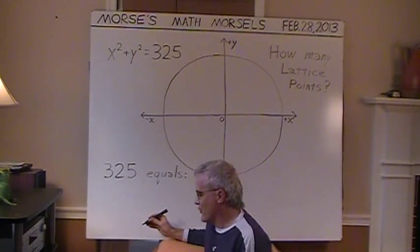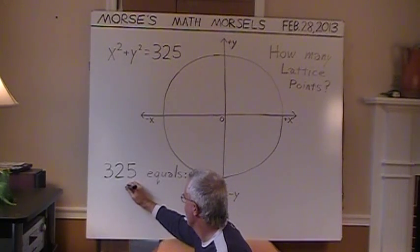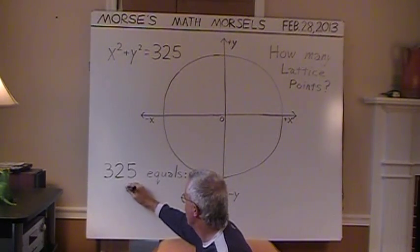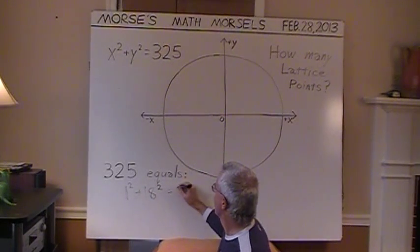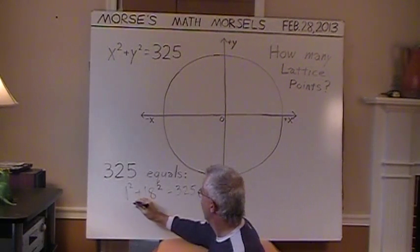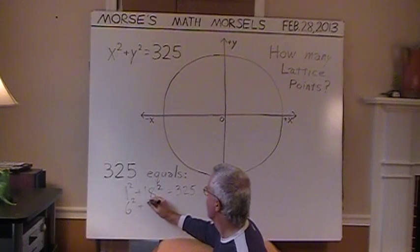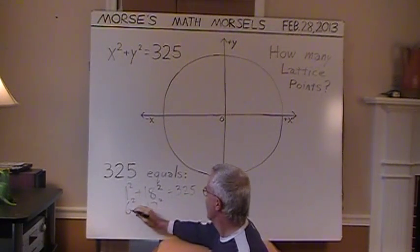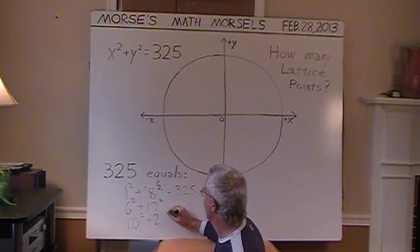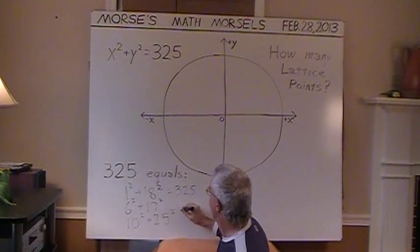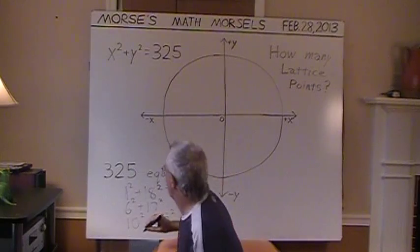So if you do a little searching of the tables of lower square numbers, you'll find that 325 equals 1 squared plus 18 squared. That's 325. And that it also equals 6 squared plus 17 squared. And finally, 10 squared plus 15 squared. All are 325. Wonderful.